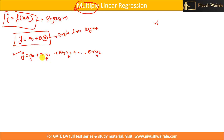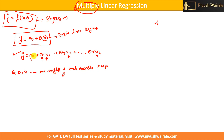Theta naught, theta 1, and theta 2 are called the coefficients of each variable. We can also say that theta naught, theta 1, and theta 2 are the corresponding weights of each variable. Theta naught corresponds to x naught where x naught equals 1. Theta 1 is the coefficient for variable x1, and in terms of machine learning, it is the weight of variable x1.